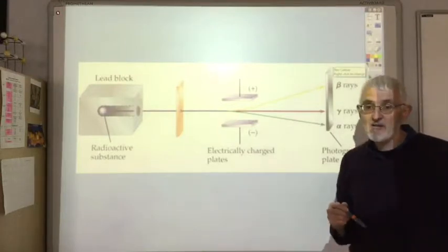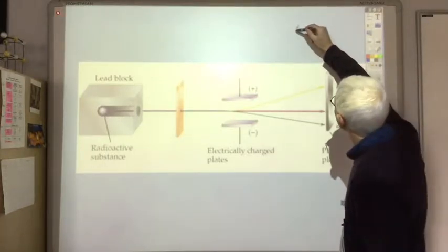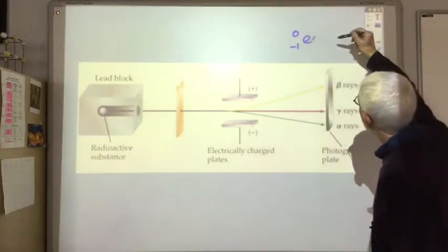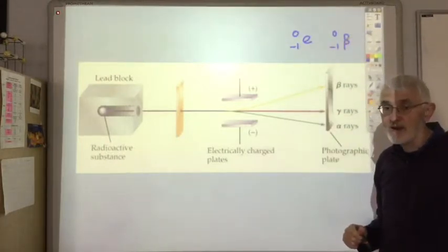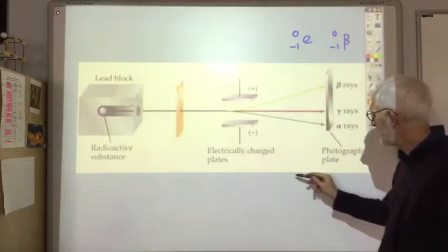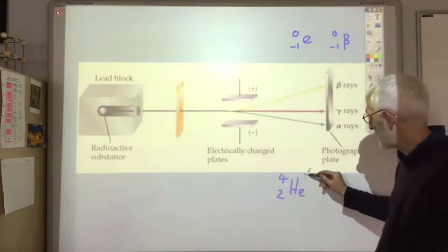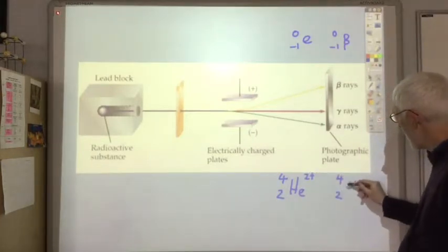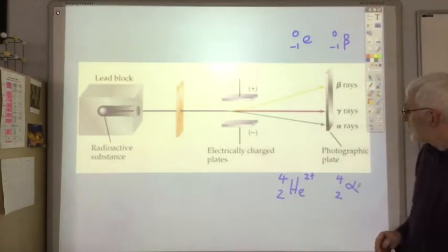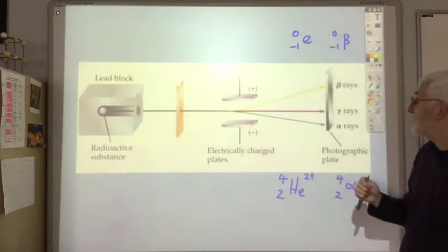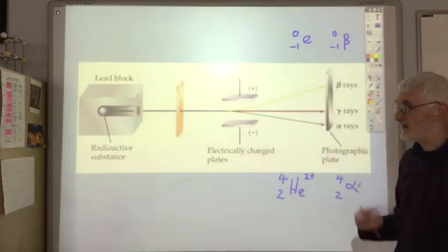Beta particles are in fact negatively charged electrons which are emitted by the nucleus. We can write that using the electron notation or we can use the beta symbol — either is acceptable. The alpha particle is a helium nucleus, which we can write with or without the charge, or we can use the alpha particle symbol — both are acceptable ways of writing the alpha particle. Worth pointing out that the alpha particle is very large compared with a beta particle, which is why it's not deflected as much — it's a big particle in subatomic terms.